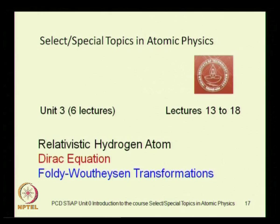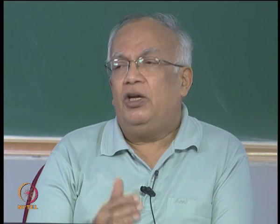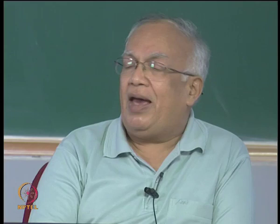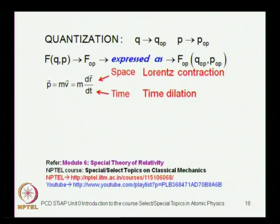In Unit 3, we will study the relativistic hydrogen atom. This comes into play because the speed of light is finite, and all consequences of the special theory of relativity must be accounted for. An important consequence is that space intervals and time intervals are not independently invariant under transformations between frames moving at constant velocity. We must go beyond the Schrödinger equation and use the Dirac equation for the electron, then study the consequences of this relativistic quantum mechanical equation.